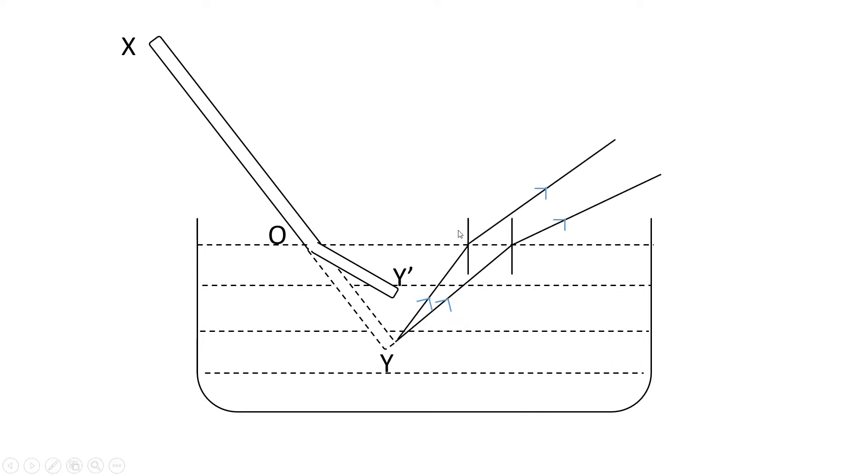But the bending is different because the first incident ray makes a smaller angle, and that's why its corresponding angle of refraction is less. The second incident ray makes a larger angle, so its corresponding angle of refraction is more.